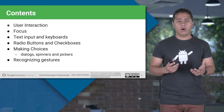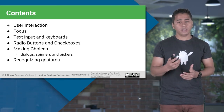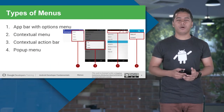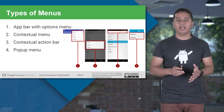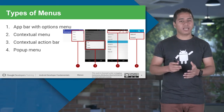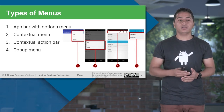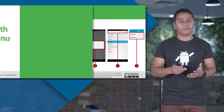In this particular topic, we are going to cover how exactly we can design our option menu into our action bar, what contextual menus are, and what popup menus are. First, let's talk about how many types of menus there are. There are basically four types of menus: first, option menu; second, contextual menu; third, contextual action bar menu; and fourth, popup menu.